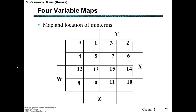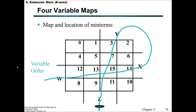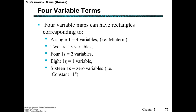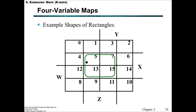Now we get into the more interesting four-variable maps. Before we just had X, Y, Z; now we've got W, X, Y, and Z. The order in which they are written into this map: W and X on one axis, Y and Z on the other, and each time between adjacent squares we're only changing by one bit — in this case Y, then Z, then X, then W. Four-variable maps have rectangles corresponding to: a single cell (all four variables), twos (three variables), fours (two variables), eights (one variable), and 16 ones (zero variables, simply constant 1).